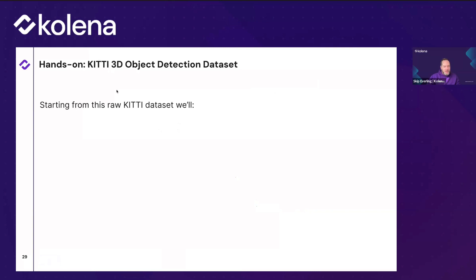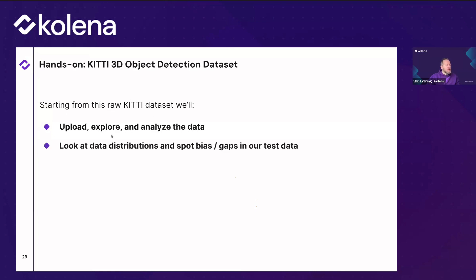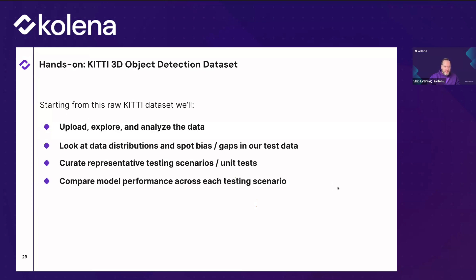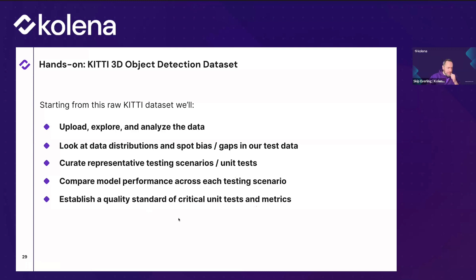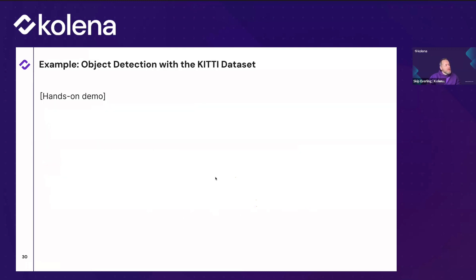Here's what we're going to do: upload, explore, and analyze the data; look at data distributions and spot bias and gaps; curate representative testing scenarios based on our findings; make unit tests based on what we see in the dataset; compare model performance across those testing scenarios; and establish a quality standard — a comprehensive set of test cases with critical unit tests and metrics.